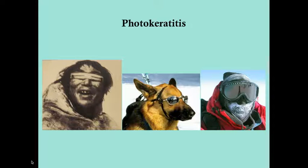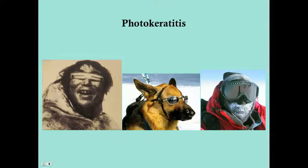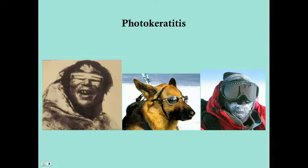Historically, the Inuits — a native population in North America living in the Canadian Arctic — used to use bones to shield their eyes from UV radiation. Of course dogs and other animals used for service or recreational purposes can benefit from wearing sunglasses. And this is typically how skiers and snowboarders will wear their protective eyewear — it's very important to prevent photokeratitis.